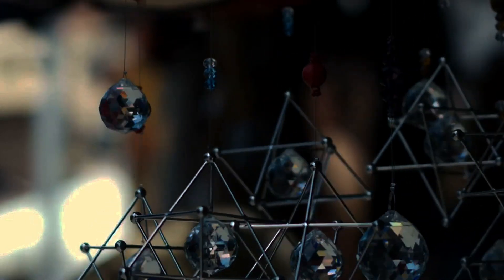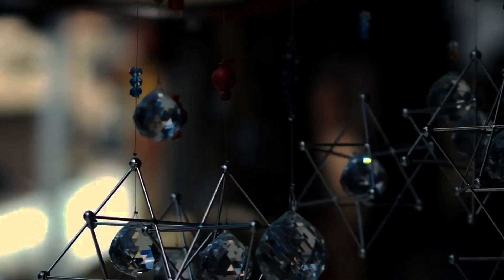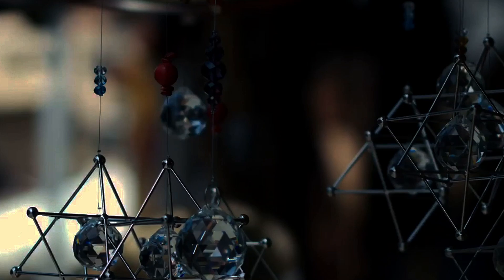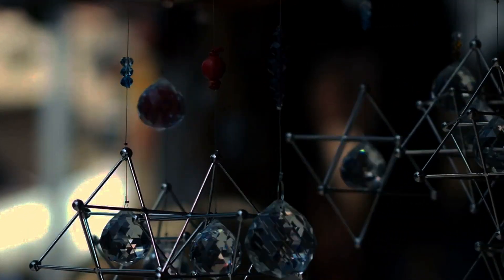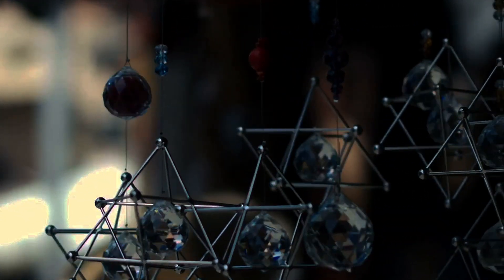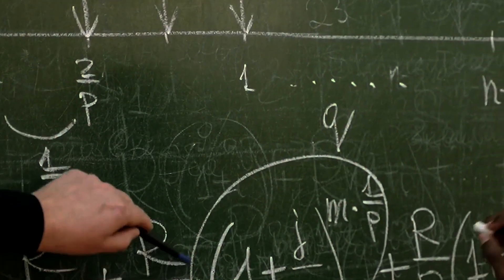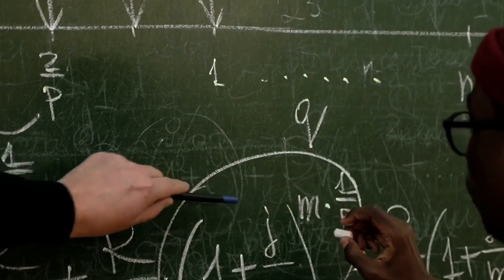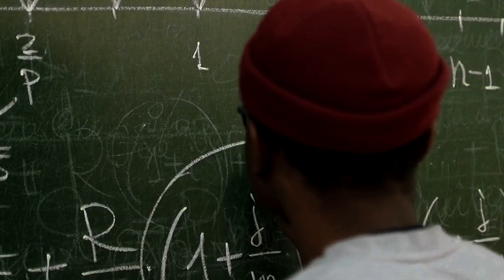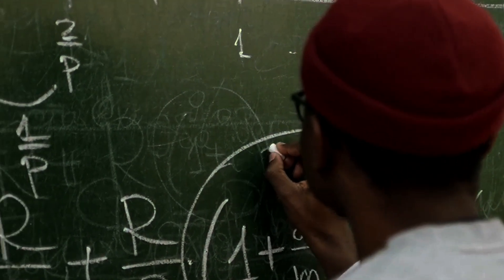A proof of this conjecture, along with the more comprehensive geometrization conjecture, was finally provided by Grigori Perelman in 2002 and 2003. Perelman's solution completed Richard Hamilton's program for the solution of the geometrization conjecture, a program that Hamilton had developed over the prior 20 years.